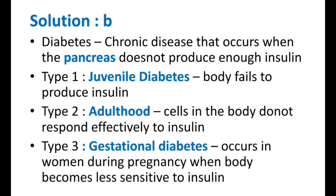Let us see the definition: diabetes is a chronic disease that occurs when the pancreas does not produce enough insulin. Recently they asked a question — insulin is a hormone produced by which body part? Many people don't know this, so remember: it is the pancreas which produces the insulin hormone.